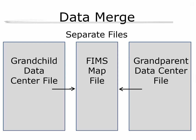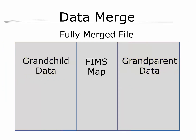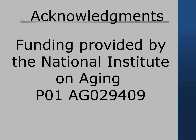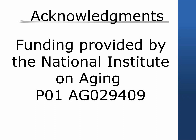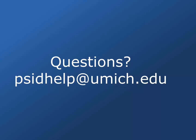From here, you'll be able to download any number of variables from the data center for both the young adults and their corresponding grandparents. Once you have merged those separate files with the FIMS map, you'll have a fully linked dataset of young adults and their grandparents from which to start your analysis. This web tutorial was produced by Nora Insolera and Vicki Friedman with funding from the National Institute on Aging. This ends the web tutorial on the PSID's Family Identification Mapping System. Comments and questions may be sent to psidhelp@umich.edu.